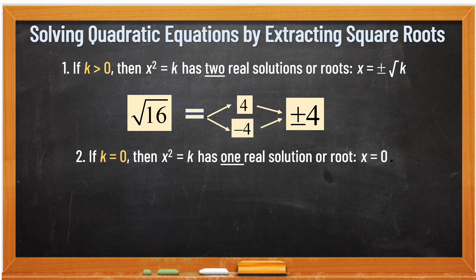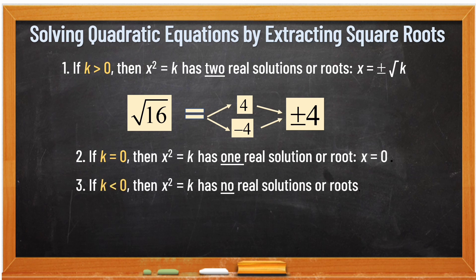Another: if k is equal to 0, then x squared is equal to k has one real solution or root. Siyempre, kung, halimbawa, square root of 0 — obviously, ang sagot dun is 0. Isa lang ang answer — one solution lang.